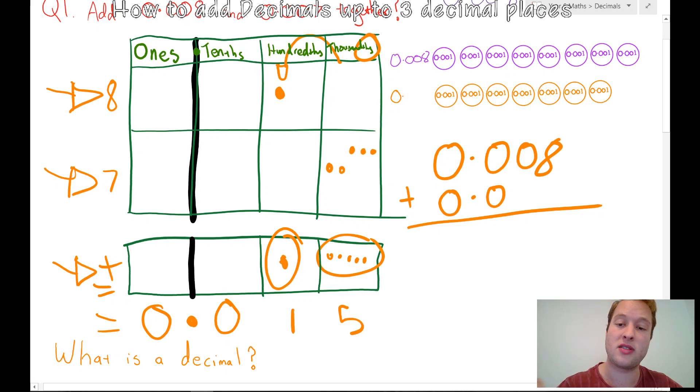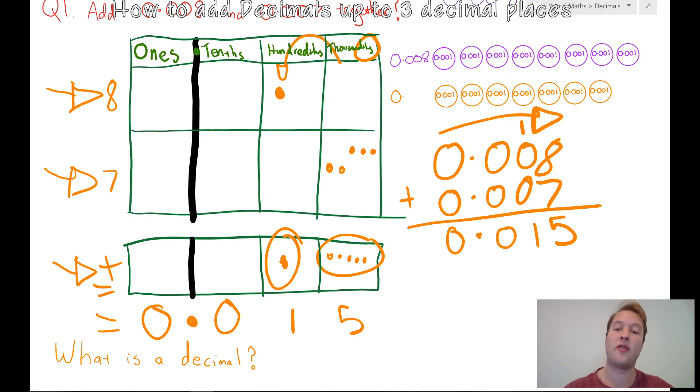Let's go back to the original question. 0.007. Now I'll start to the right. 8 plus 7 is 15. My 5 here, my 1 I put up here. I've got 1 plus 0 plus 0 is 1. 0 plus 0 is 0. Make sure I put my decimal in. 0 plus 0 is 0. My answer is one hundredth five thousandths. That is how you add decimals. Have a great day.